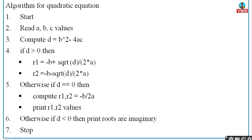Here sqrt is a predefined function — the logic for finding the square root is already available in the math.h header file, so you simply call it and pass the d value. Root 1 and root 2 will be computed only if d is greater than 0. If d equals 0, then both roots are equal and the formula is r1 = r2 = −b / 2a. You simply print r1 and r2.